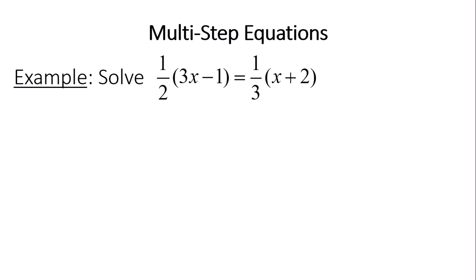Our first multi-step equation has fractions in it, so eventually we will be removing those fractions. The first thing I want to start with is to distribute — multiply the 1/2 to everything in the first set of parentheses, and distribute the 1/3 into everything in the second set of parentheses.